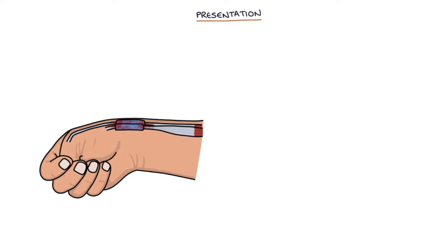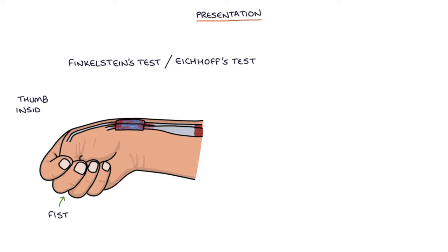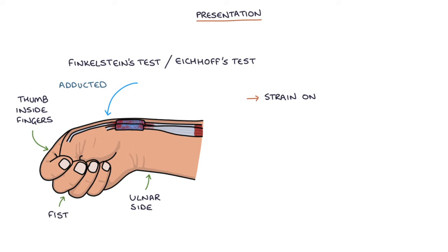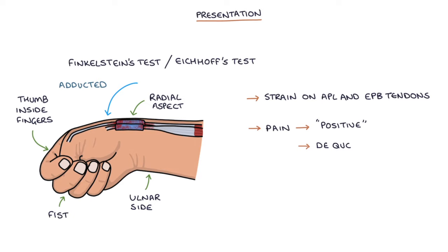There is a special test for De Quervain's tenosynovitis called Finkelstein's test. There's some confusion about what this is depending on where you look. Most sources describe the first manoeuvre as Finkelstein's test, however it may be called Eickhoff's test. This test involves the patient making a fist with their thumb inside their fingers. Then the wrist is adducted — deviated to the ulnar side — causing strain on the APL and the EPB tendons. If this movement causes pain at the radial aspect of the wrist, the test is positive, indicating De Quervain's tenosynovitis.